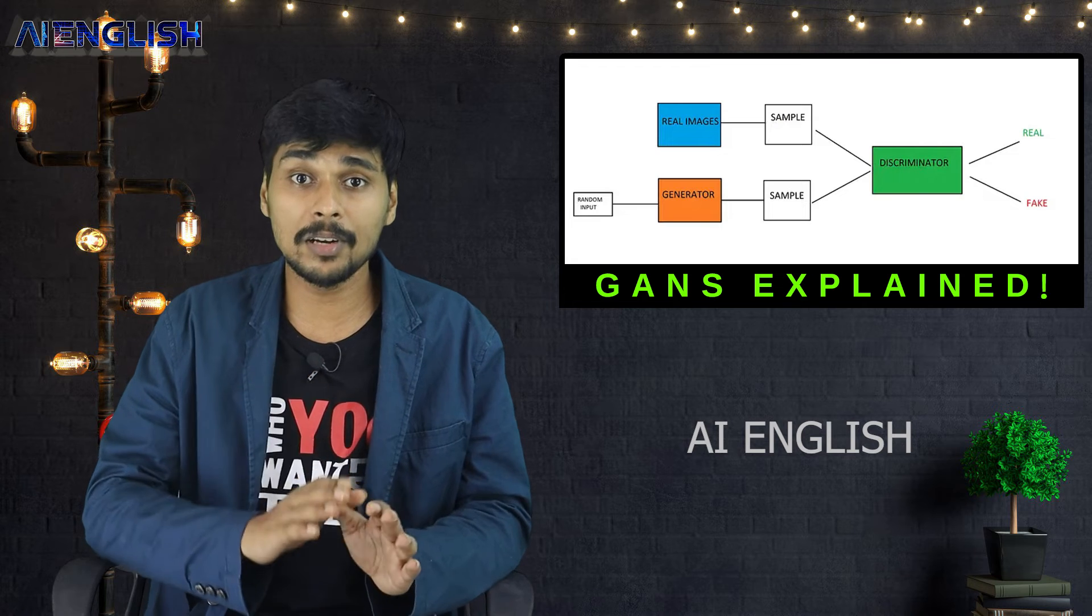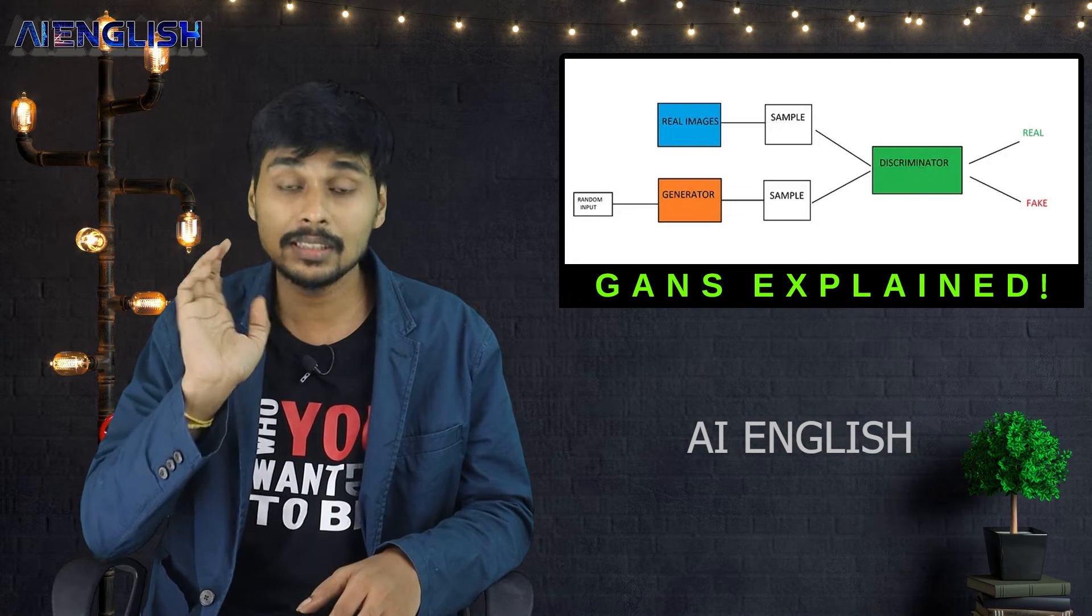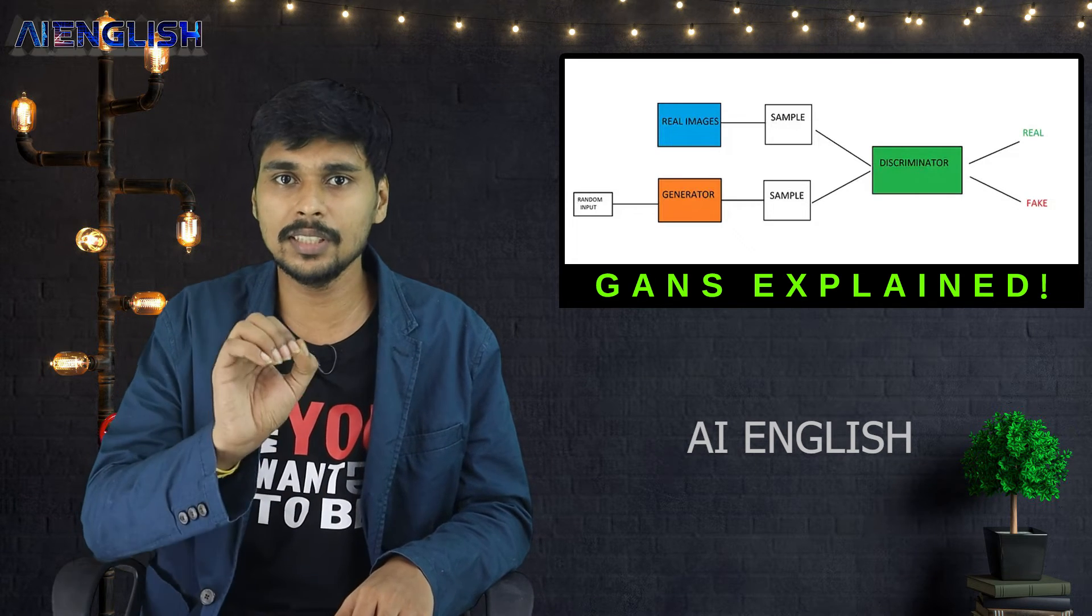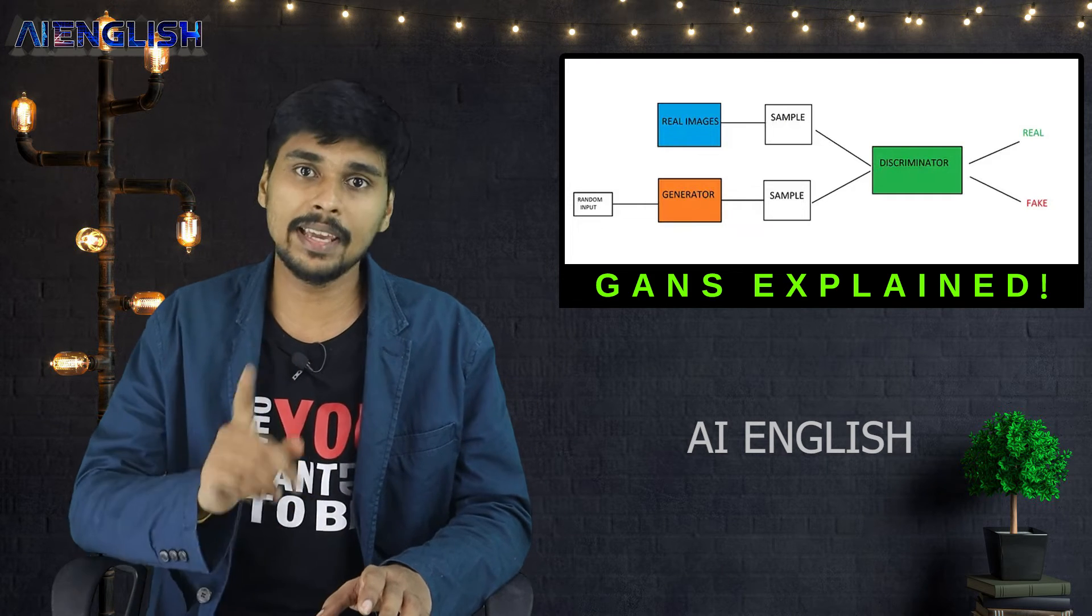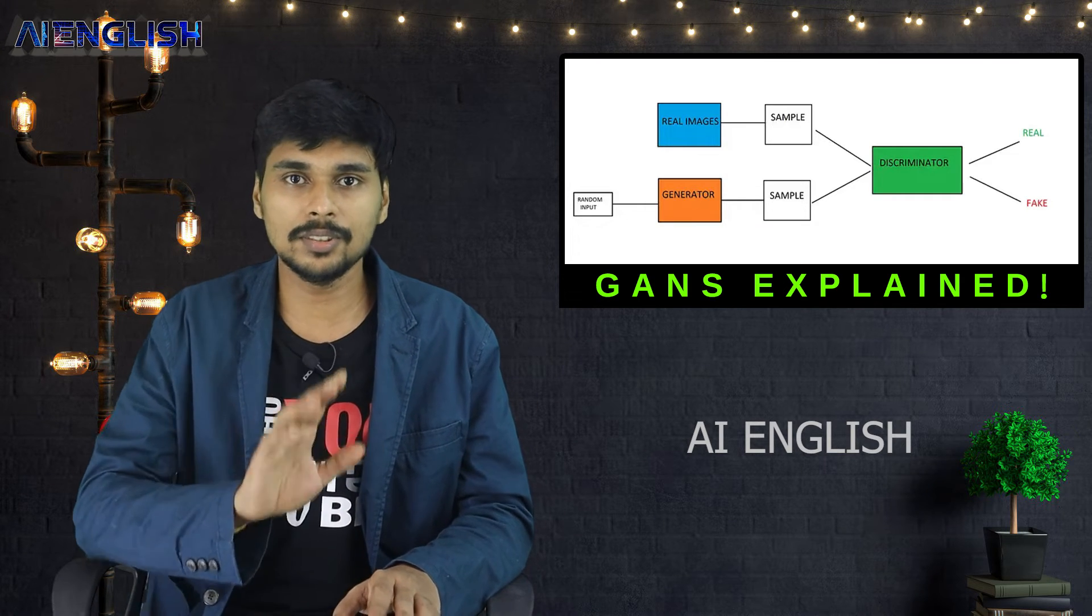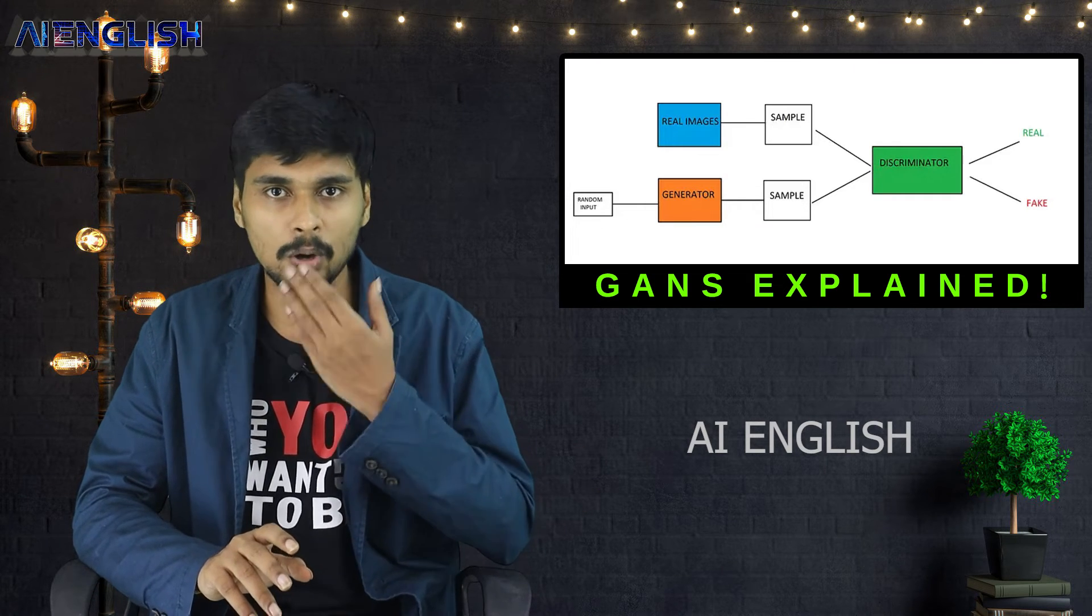The generator will put the hair on the ears. Then the discriminator will say, 'See, this is incorrect.' Again, the generator will put the hair on the nose. Again, the discriminator will say, 'This is wrong.' Again, it will put the hair on the mouth. Again, the discriminator will say, 'It is wrong.'